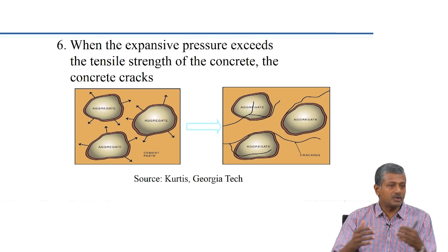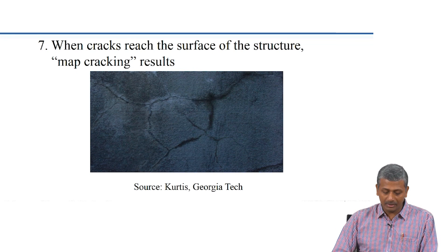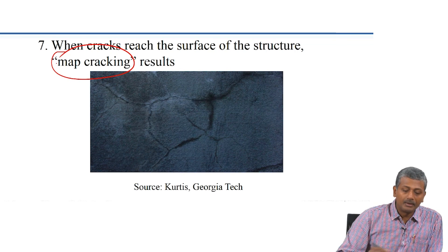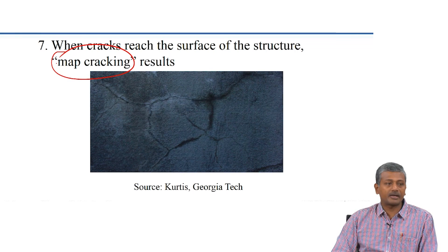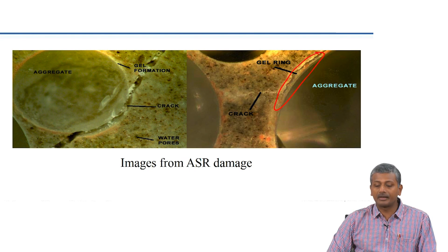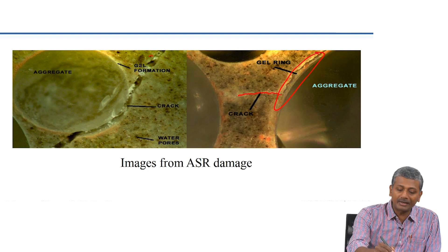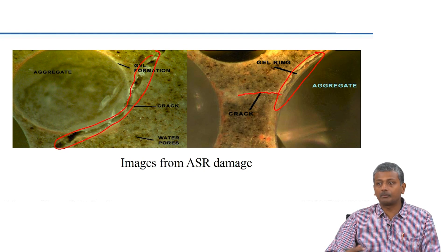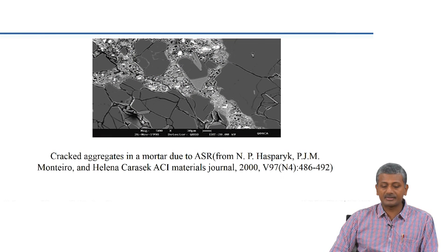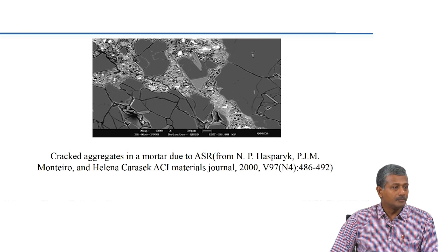The aggregate itself is weakened — its surface has been transformed into a gel — so cracks will finally extend through the aggregate itself and ultimately reach the surface of the concrete, showing up as irregular shaped cracks also known as map cracking. Map cracking means irregular shaped cracks on the surface of the concrete. Another picture of the ASR damage shows tremendous damage in the paste and the aggregate has also been completely cracked.